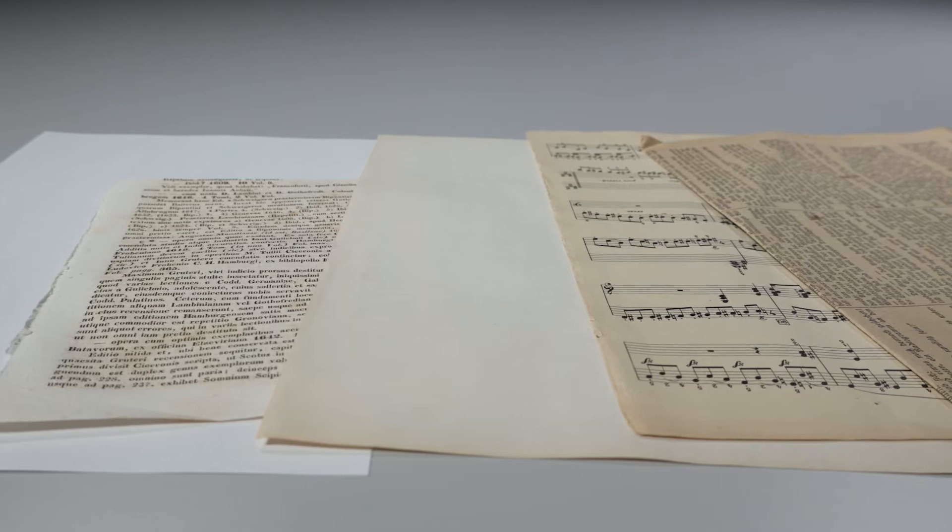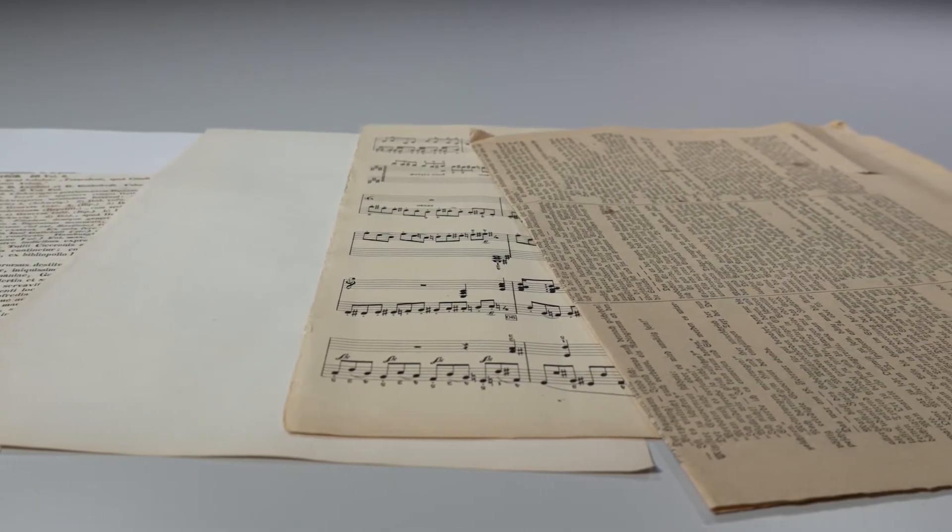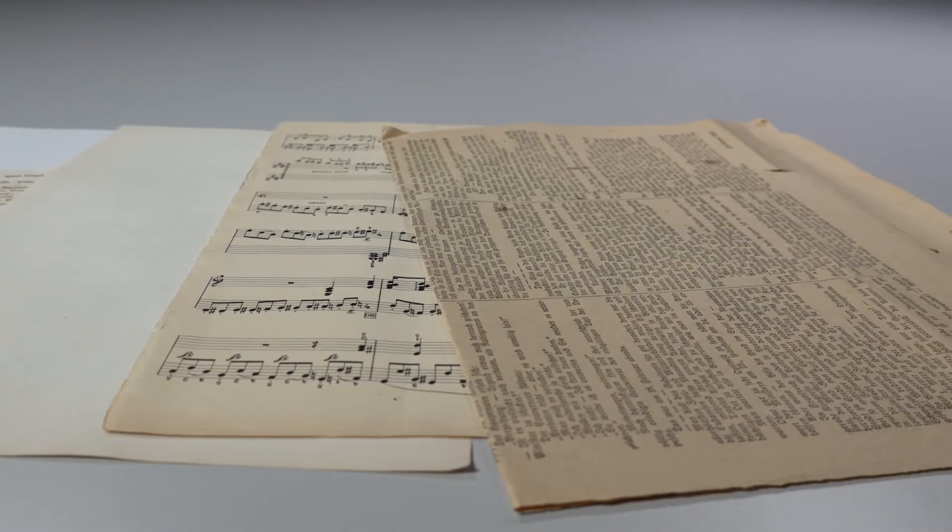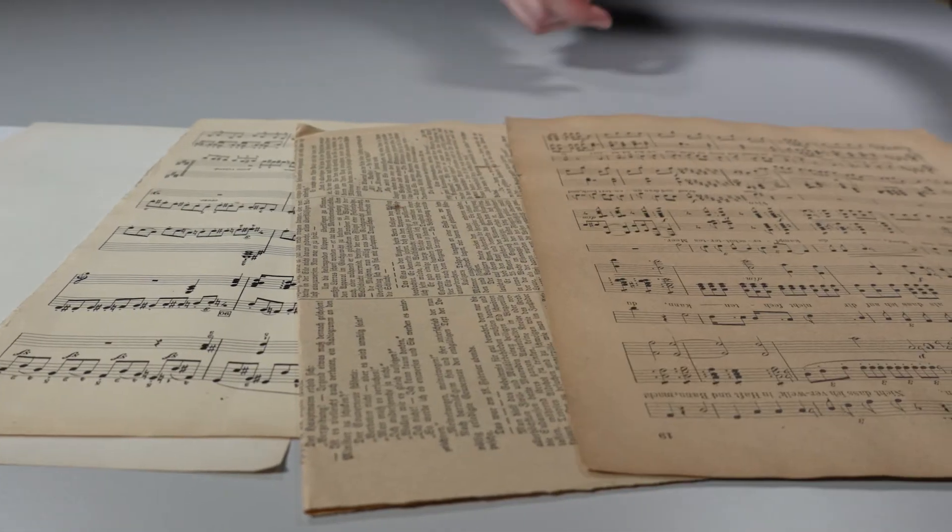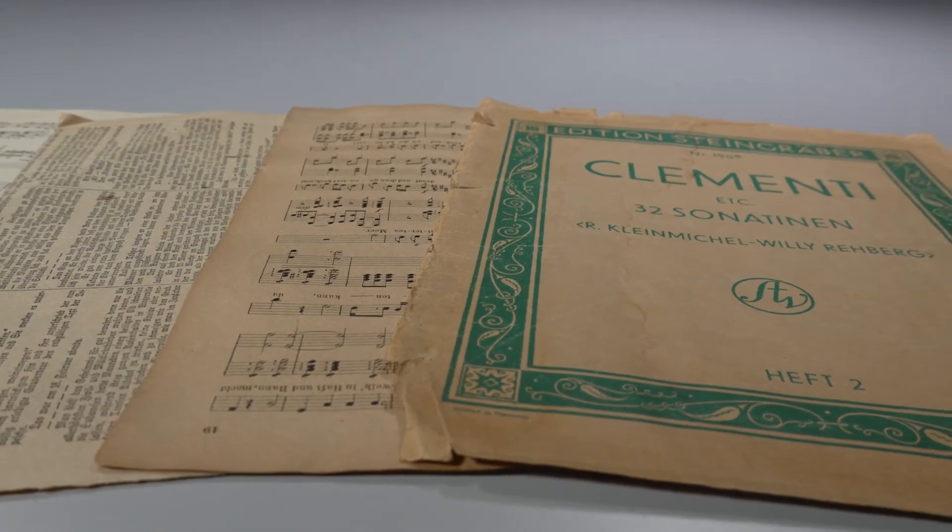Paper experiences various changes as it ages. Depending on the material composition and storage conditions, various chemical reaction products may develop which may damage the paper and cause visual alterations.